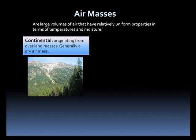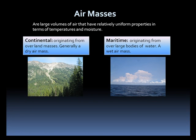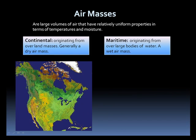There are continental air masses, originating over land and generally dry, and there are maritime air masses, originating over water and generally wet. These air masses can be broken up further by temperatures and region.